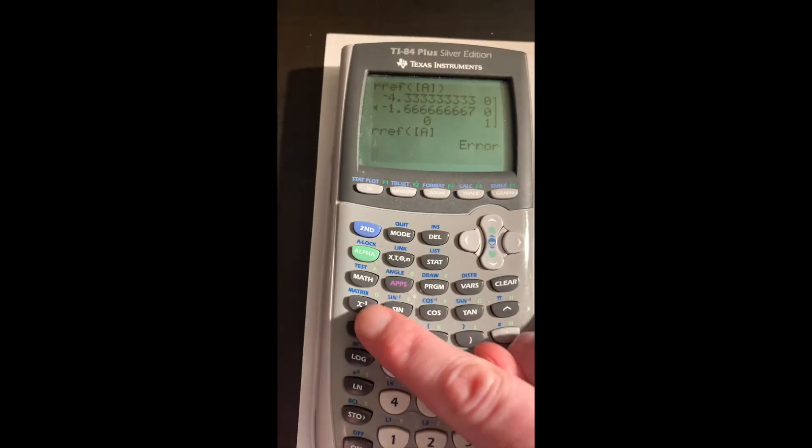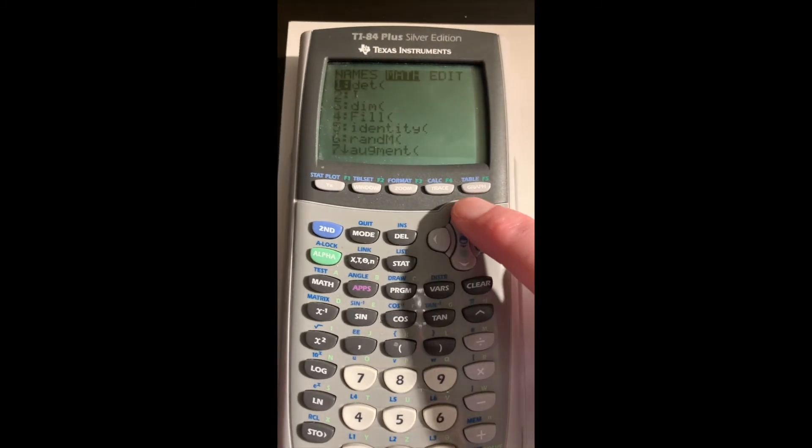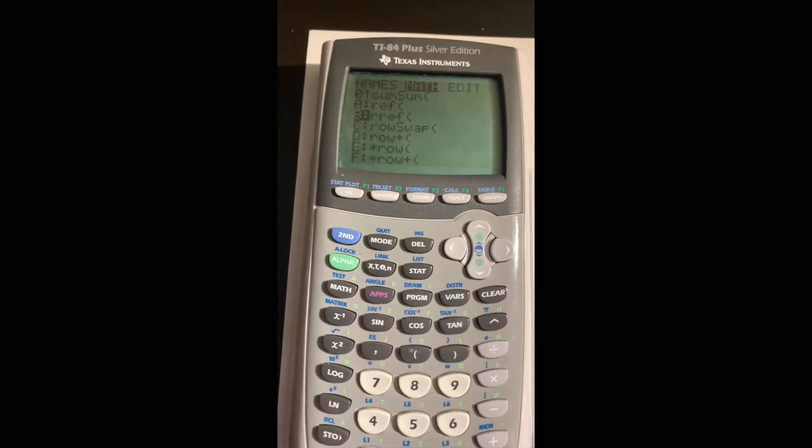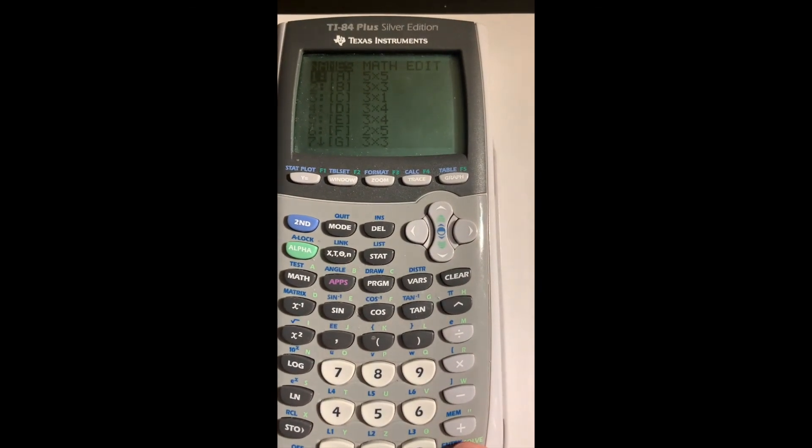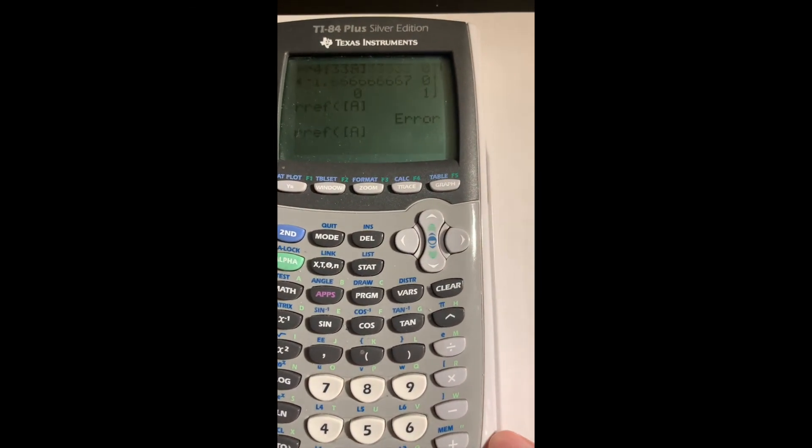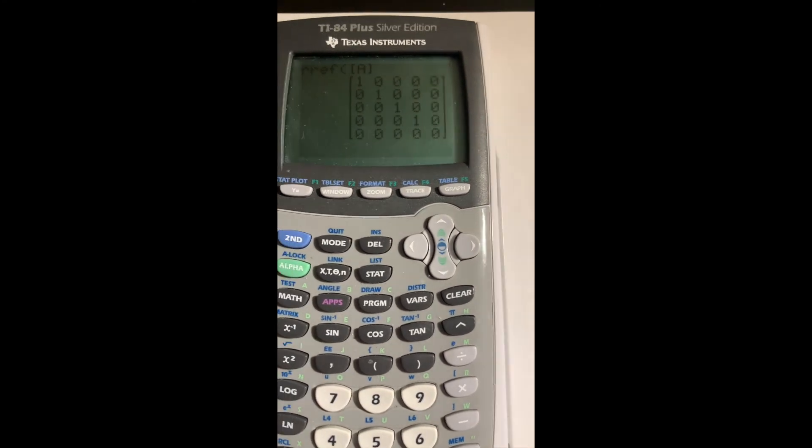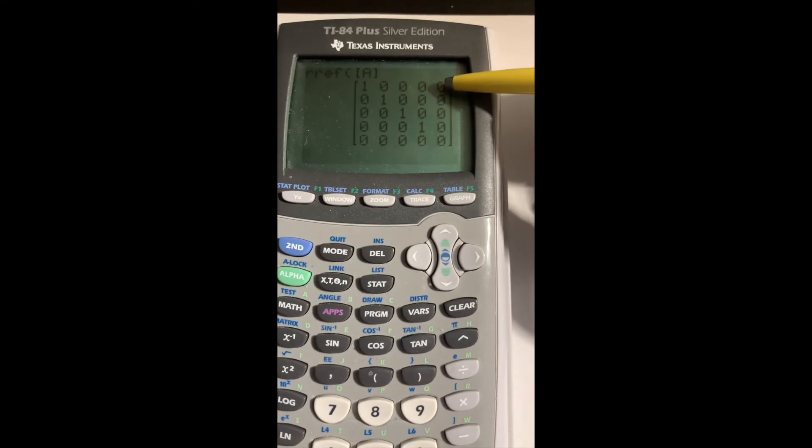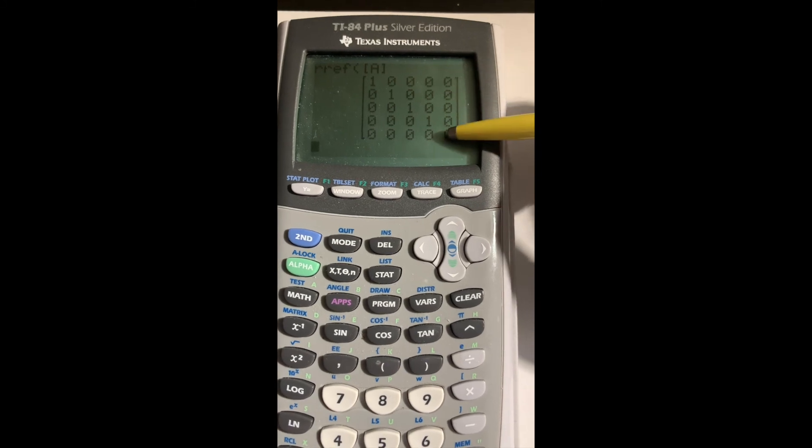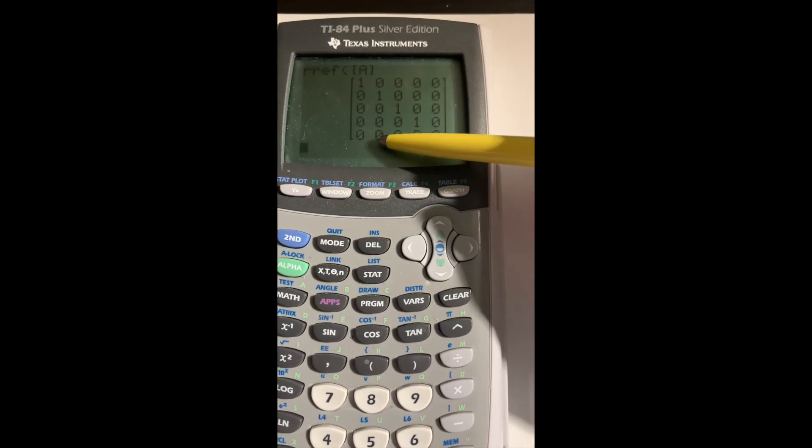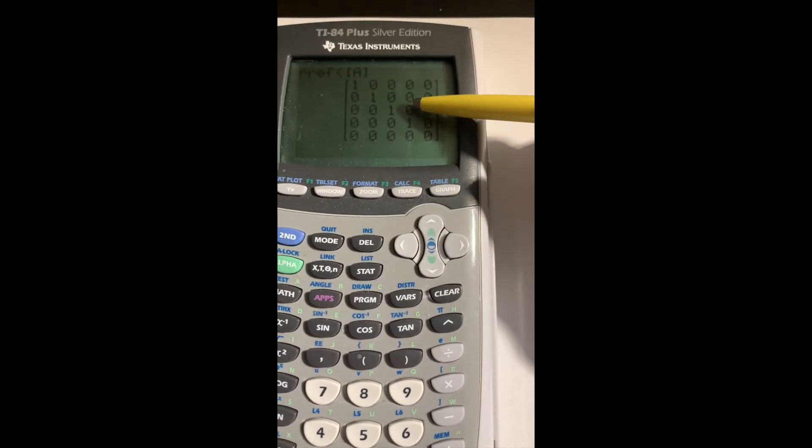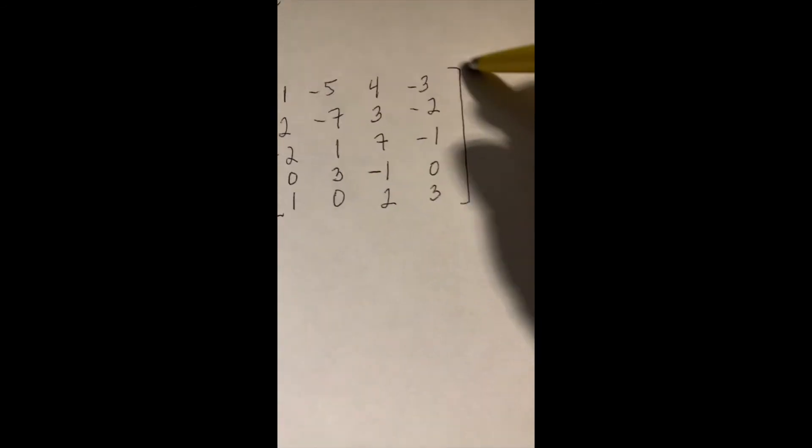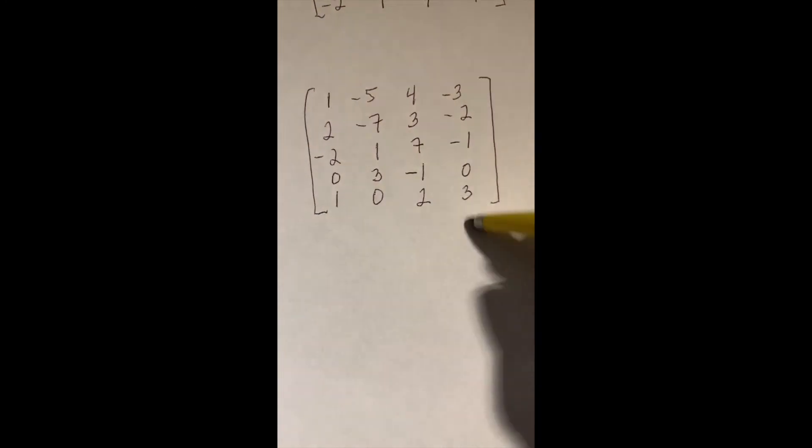Second, quit, and then back to the matrix, math, up to RREF. Second, matrix, enter for A. Now it will row reduce for me and I just ignore this last column of zeros. The first four columns here and all five rows are the reduced row echelon form of this 5 by 4 matrix. I'll see you next time.